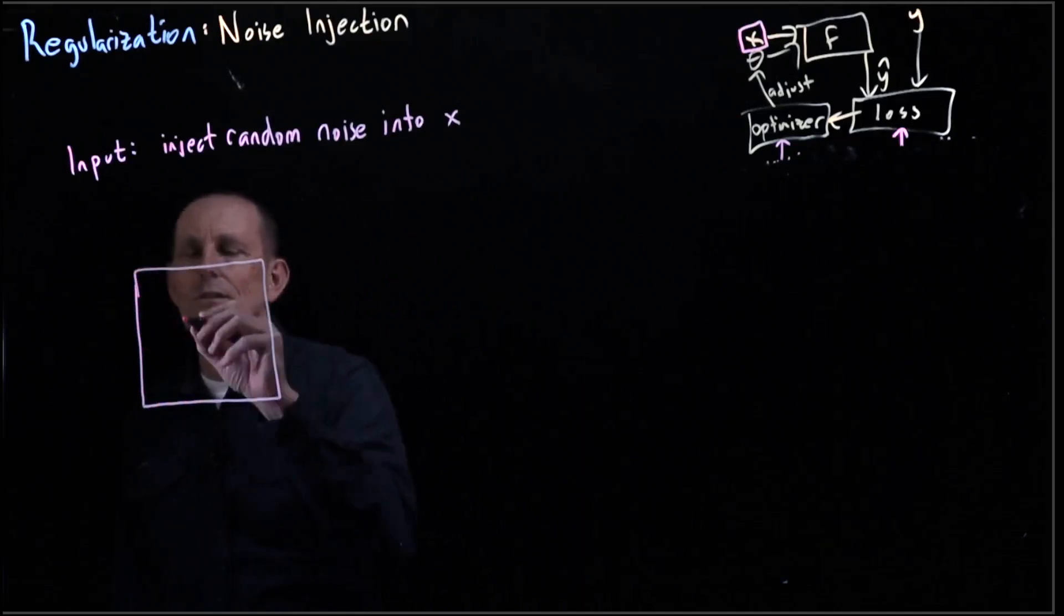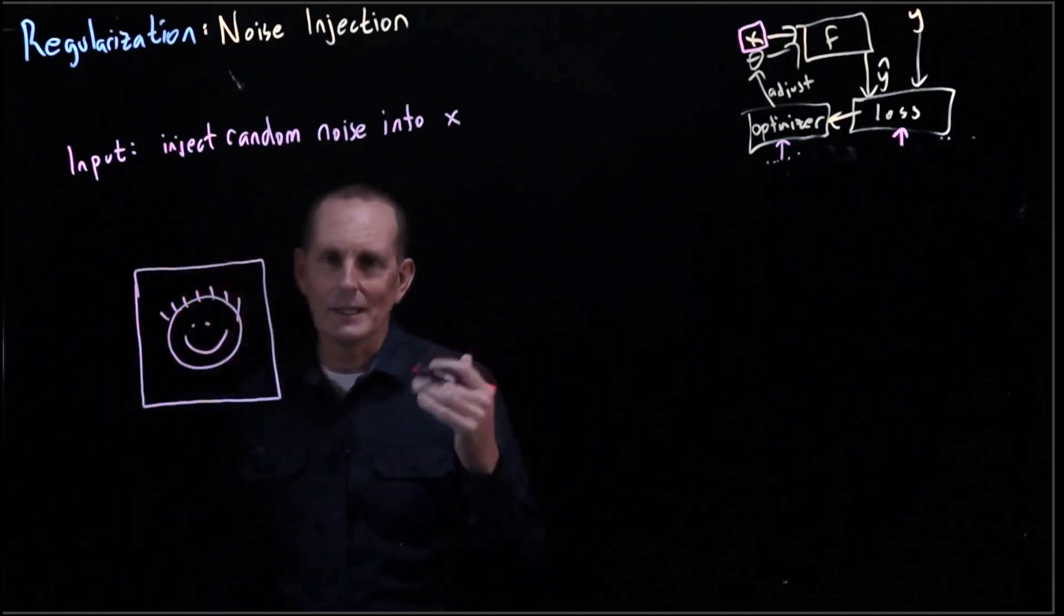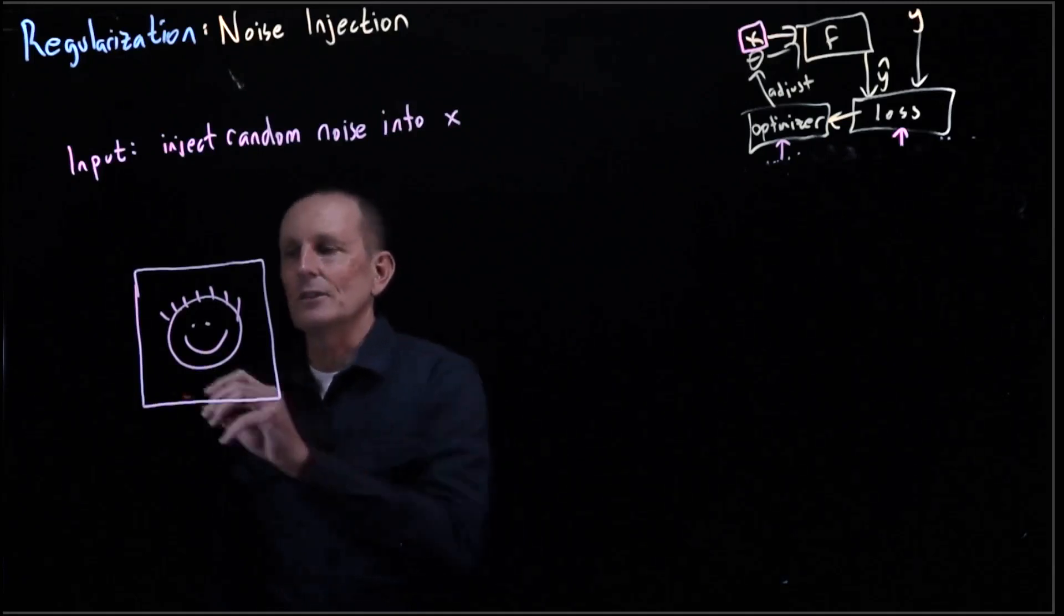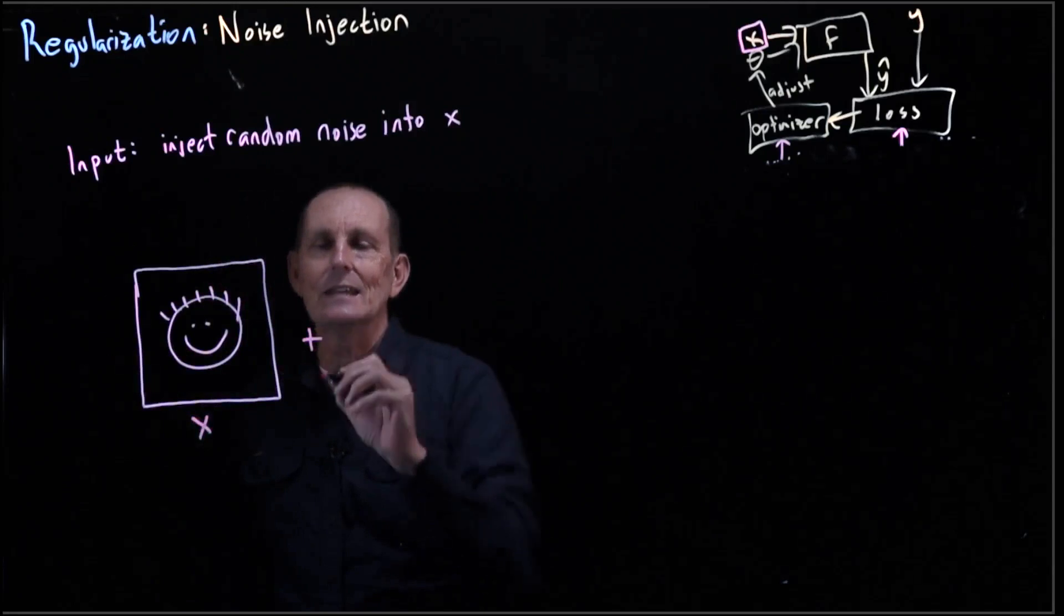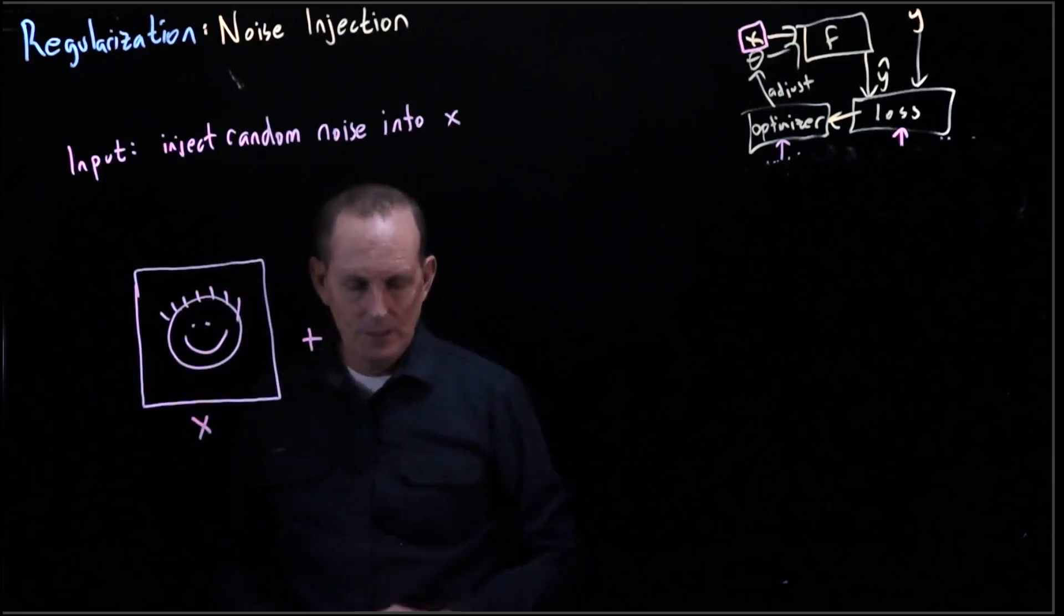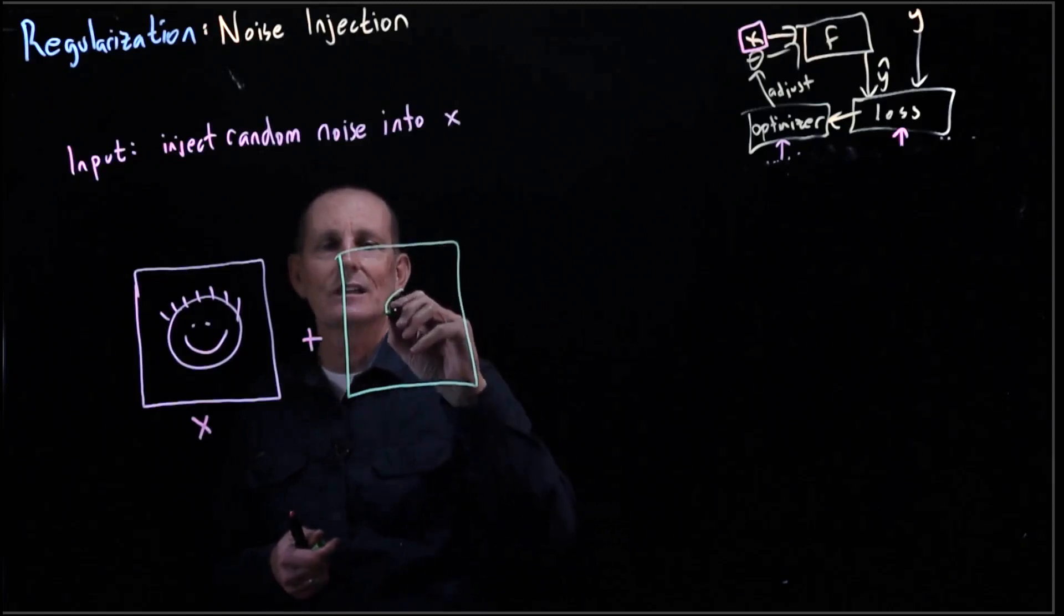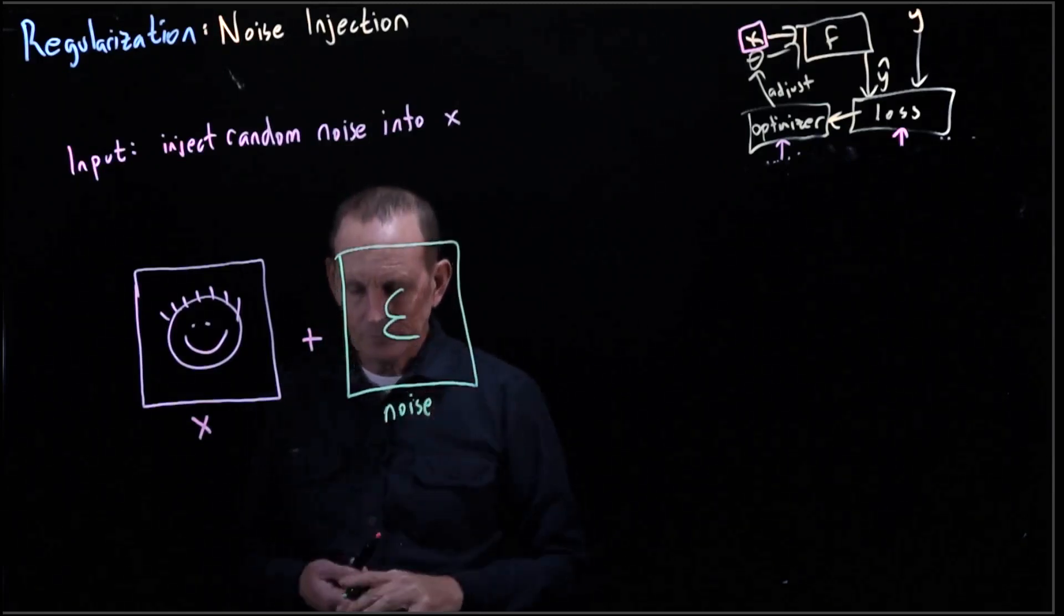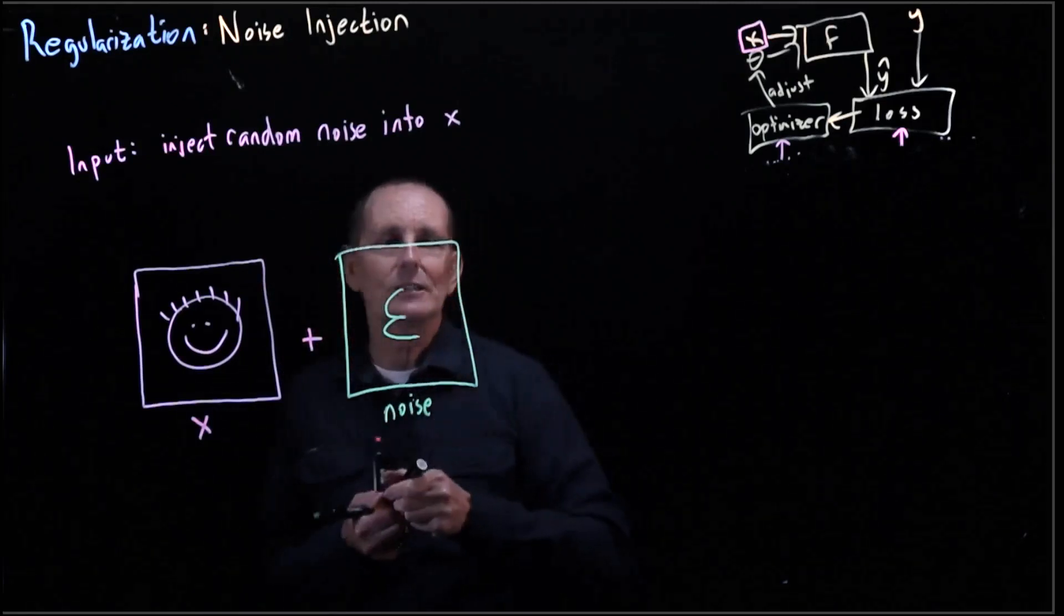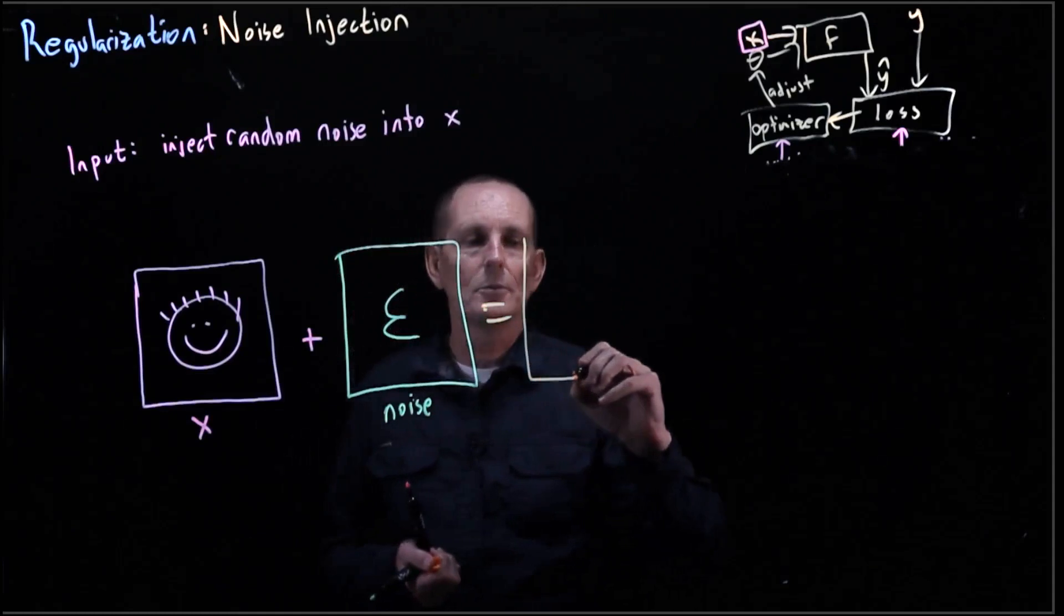So let's say we have a face, and I don't care what the label is. So this is x, we're going to go ahead and add in some noise. So this noise I'm going to represent conceptually as some epsilon. This is noise.